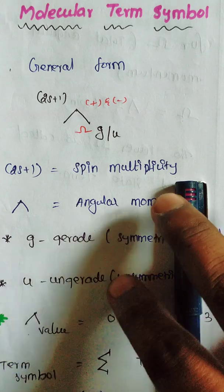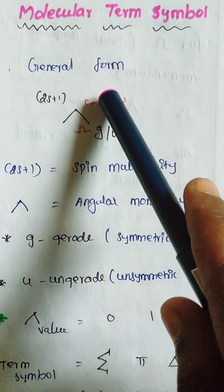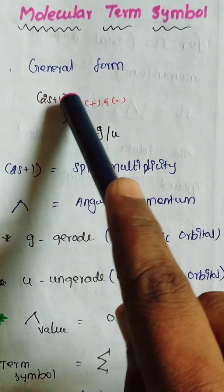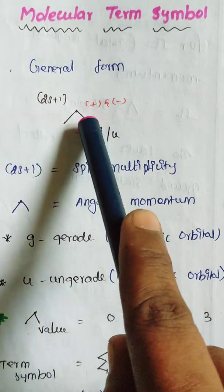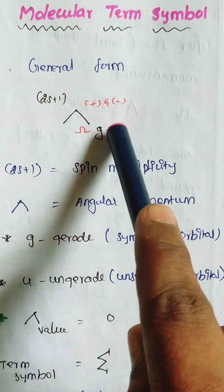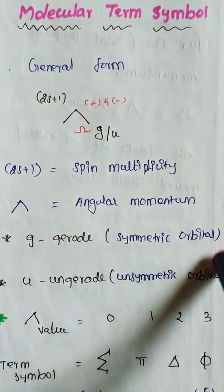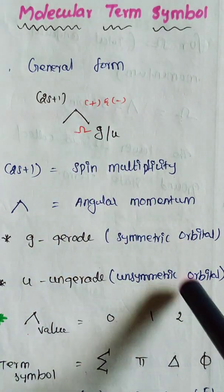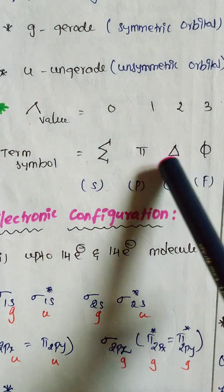The general formula of molecular term symbols is: 2S+1 is called spin multiplicity, and the middle symbol represents angular momentum. In atomic term symbols we use L, but in molecular term symbols we use angular momentum with gerade (g) and ungerade (u) subscripts. G refers to a symmetric orbital and U refers to an asymmetric orbital.